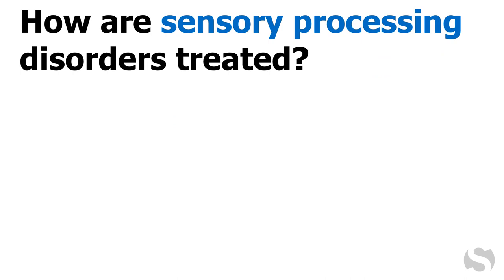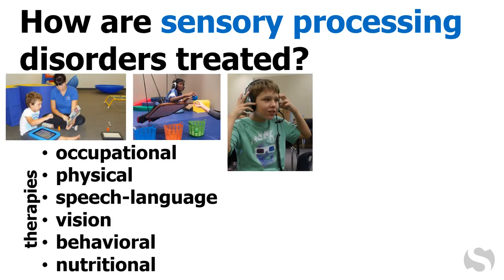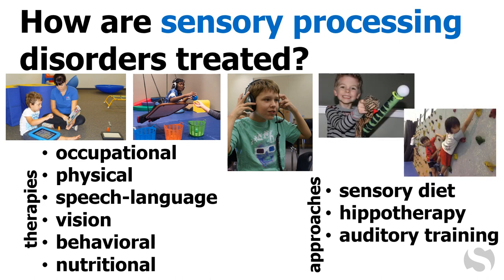How are sensory processing disorders treated? Numerous types of therapies can help, including occupational therapy and physical therapy. A number of approaches can be used, including adjusting the child's sensory diet, or what types of sensory inputs the child gets on a regular basis.